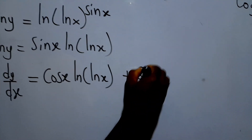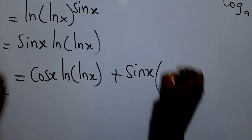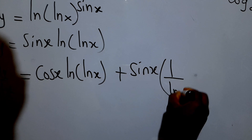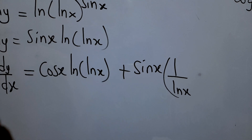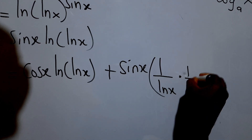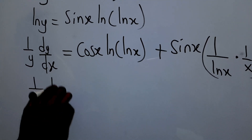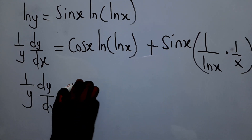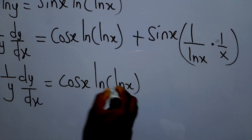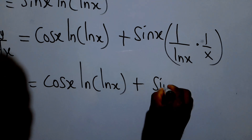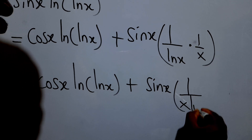Then we add: keep sin(x) and differentiate ln(ln(x)). When differentiating a ln function, we reciprocate the function. The function here is ln(x), so we get one over ln(x), then multiply by the derivative of ln(x), which is one over x. So we have: (1/y) · dy/dx equals cos(x) · ln(ln(x)) plus sin(x) over (x · ln(x)).